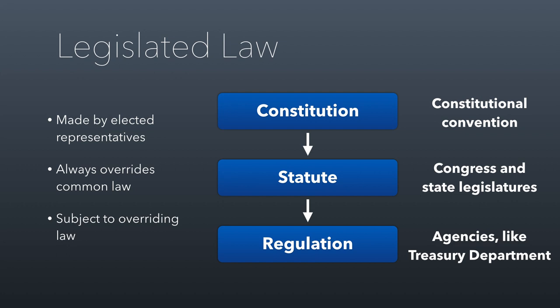One interesting thing to note is that there's no such thing as pure federal common law, but there is pure common law at the state level. In the states, there can be a law that only goes back to judicial decisions. But at the federal level, there has to be either a constitutional provision or a statute at the foundation of any decision made by a judge, whereas at the state level, you can go all the way back through common law.